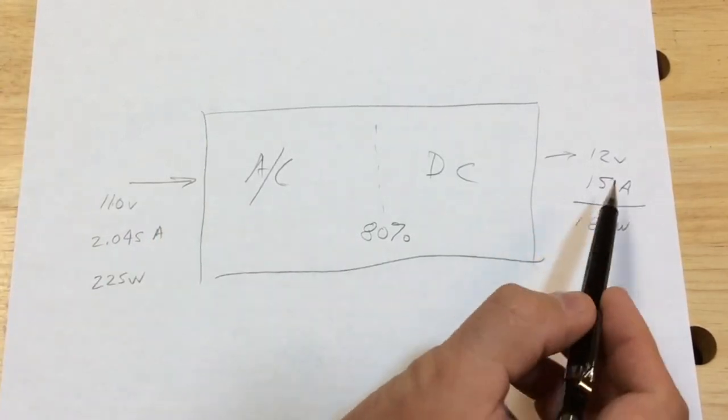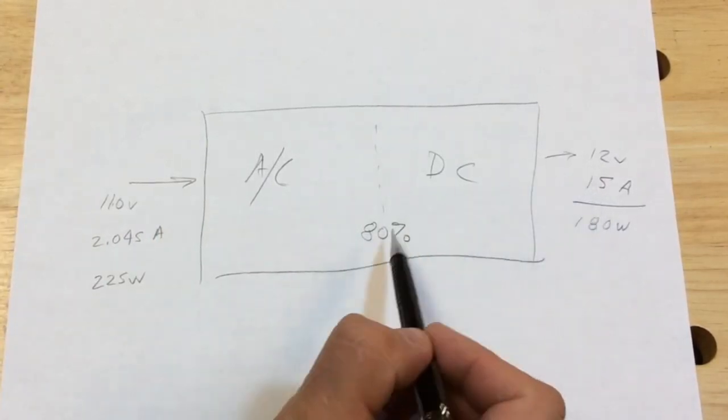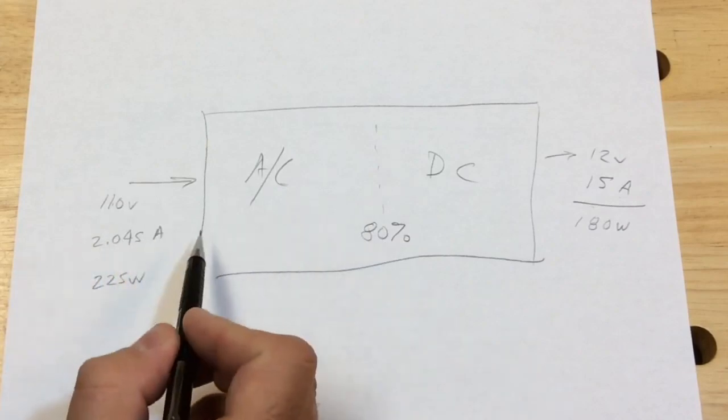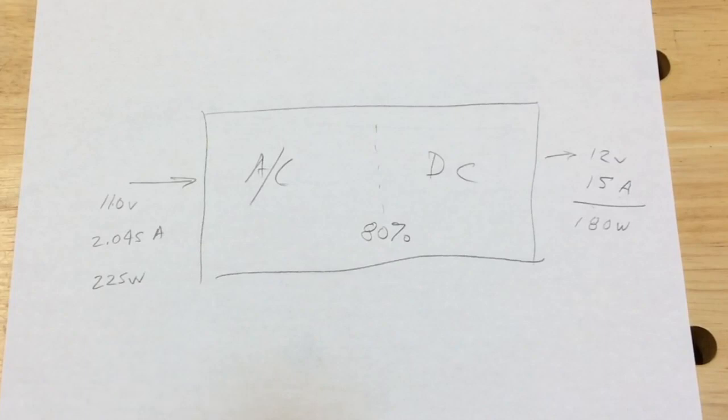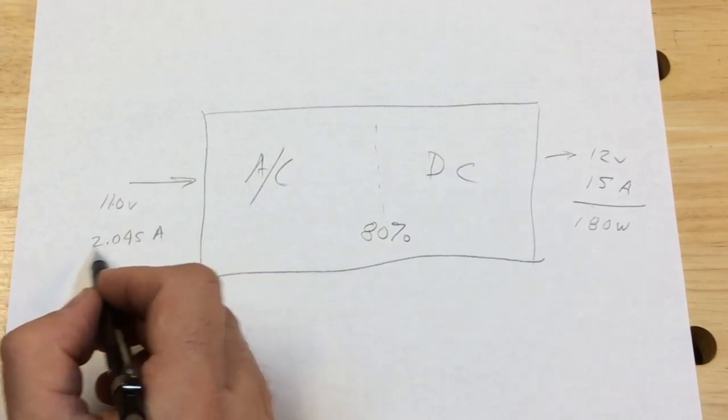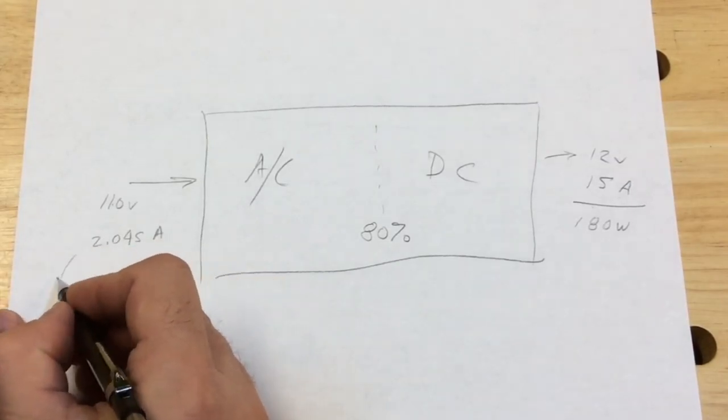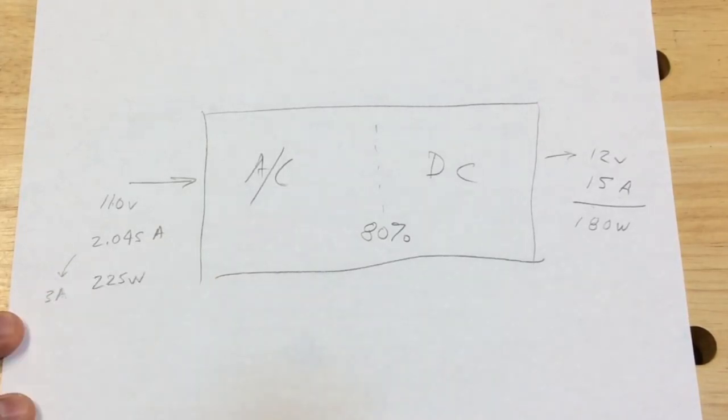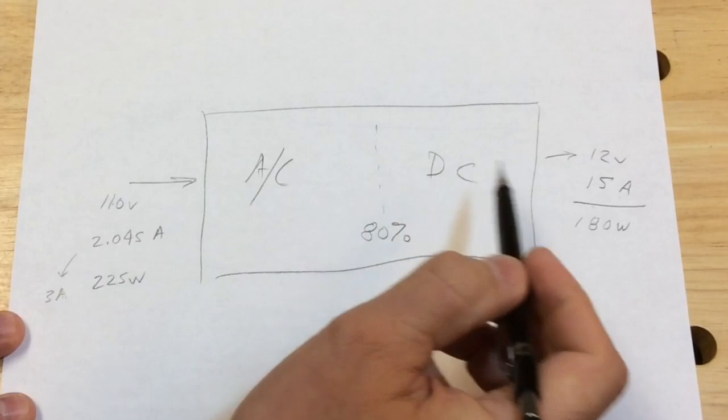If I divide the 110 into 225, that's going to give me 2.045 amps. So in order to deliver 15 amps over here at 80% efficiency, I need 2.45 amps coming in. And that's what's going to help me determine my fuse. So I know I want to go bigger than this. So perfect would probably be a 3 amp fuse.